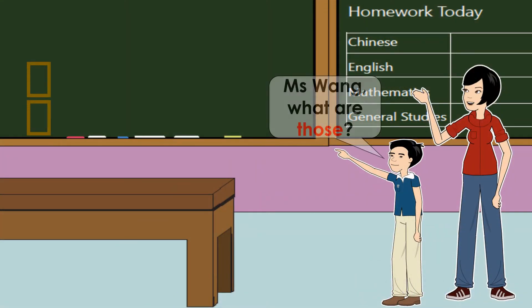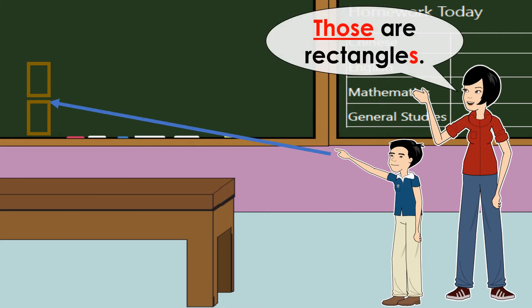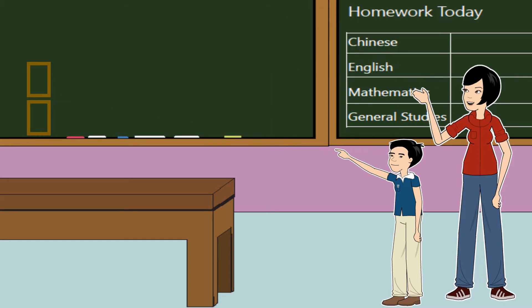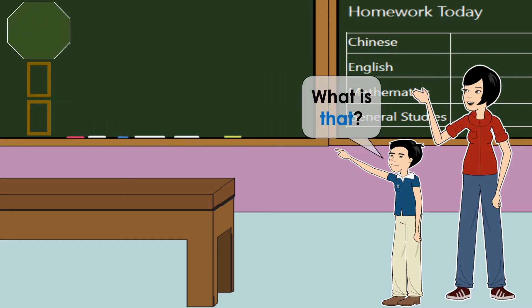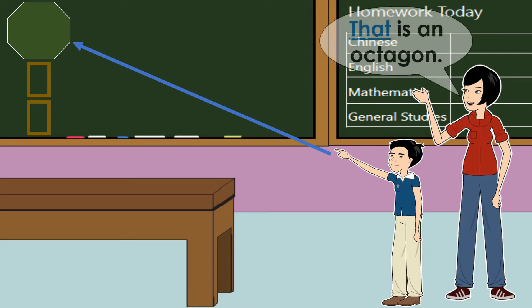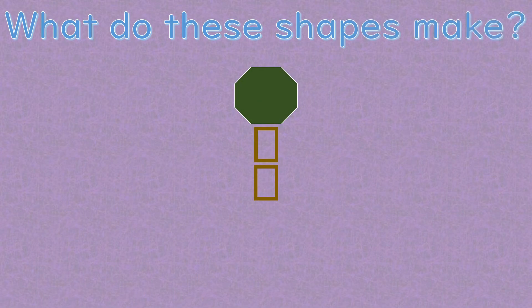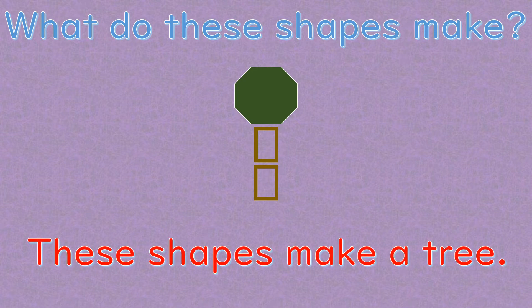Miss Wang, what are those? Those are rectangles. What is that? That is an octagon. What do these shapes make? These shapes make a tree.